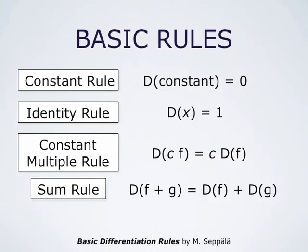We use the definition of the derivative to prove the following differentiation rules. The constant rule says that the derivative of a constant function is 0. The identity rule says that the derivative of the function x is 1. The constant multiple rule states that the derivative of a constant c times a function f is c times the derivative of the function.